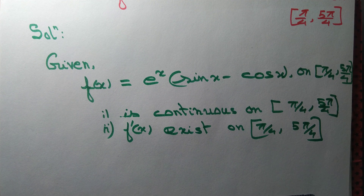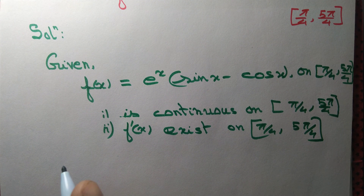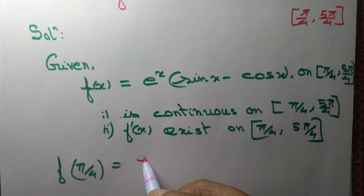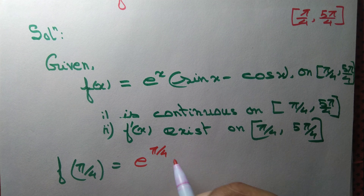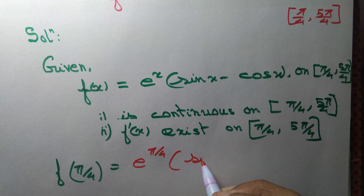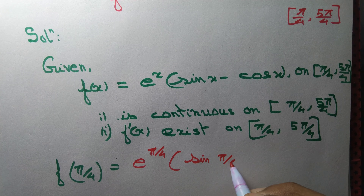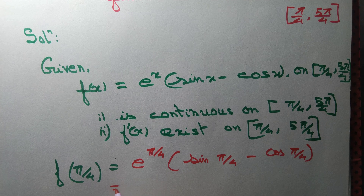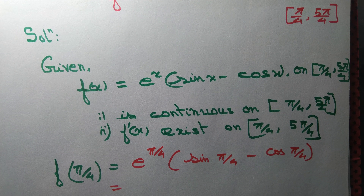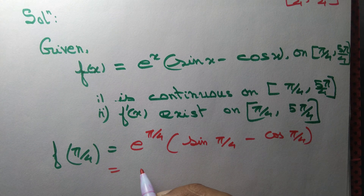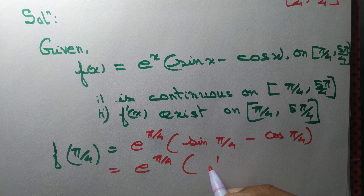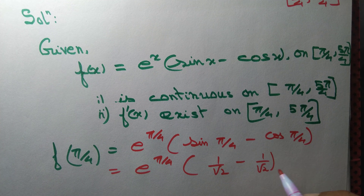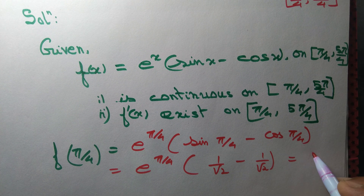Now let us compute the value of f at the endpoints. f(π/4) = e^(π/4) · (sin(π/4) − cos(π/4)). We know sin 45° = 1/√2 and cos 45° = 1/√2, so e^(π/4) · (1/√2 − 1/√2) = 0.